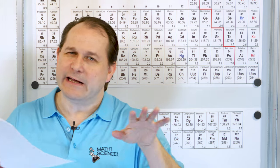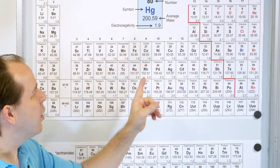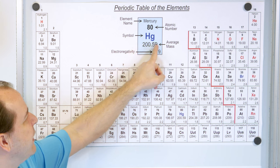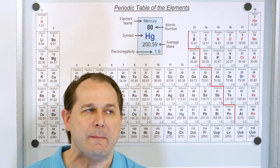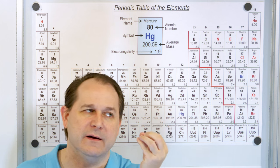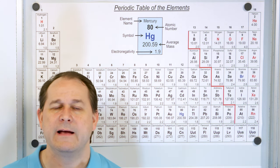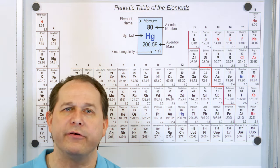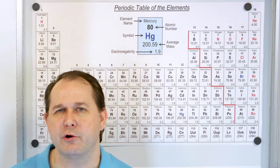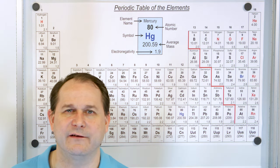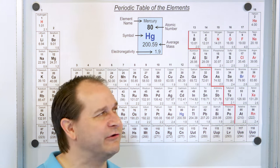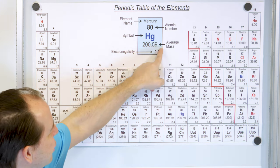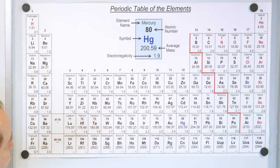We're going to have an entire lesson on isotopes. For now, just know that this number is the mass we use for Mercury atoms — it's a weighted average of all the different isotopes of Mercury that exist in nature. We'll also talk about the units and what the numbers mean a little bit later.